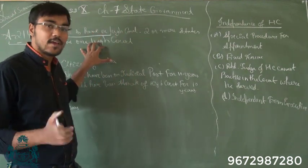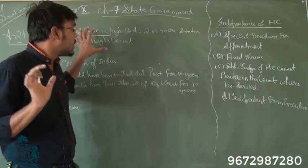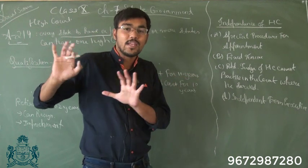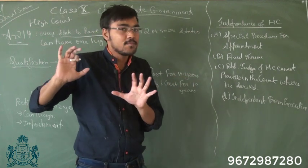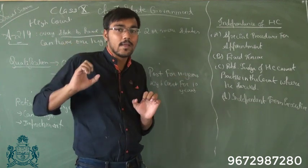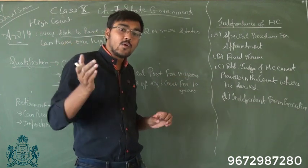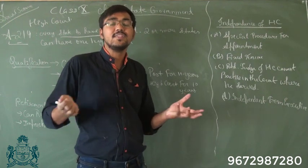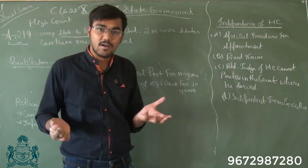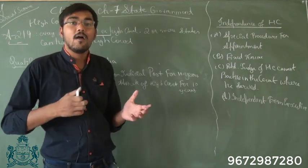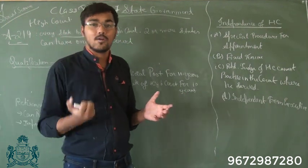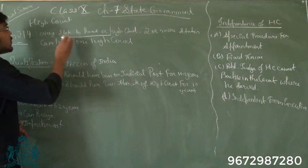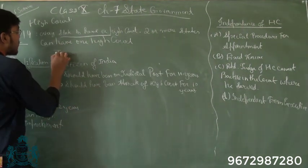Two or more states can have a single High Court. In India, there are around 28 states and 8 to 9 union territories, but the High Courts are around 24 to 26, because many states have a common High Court.